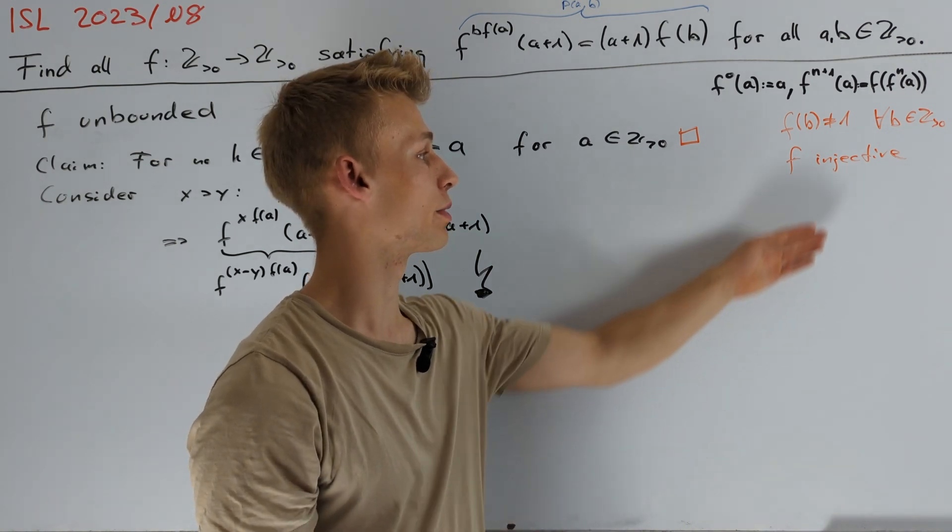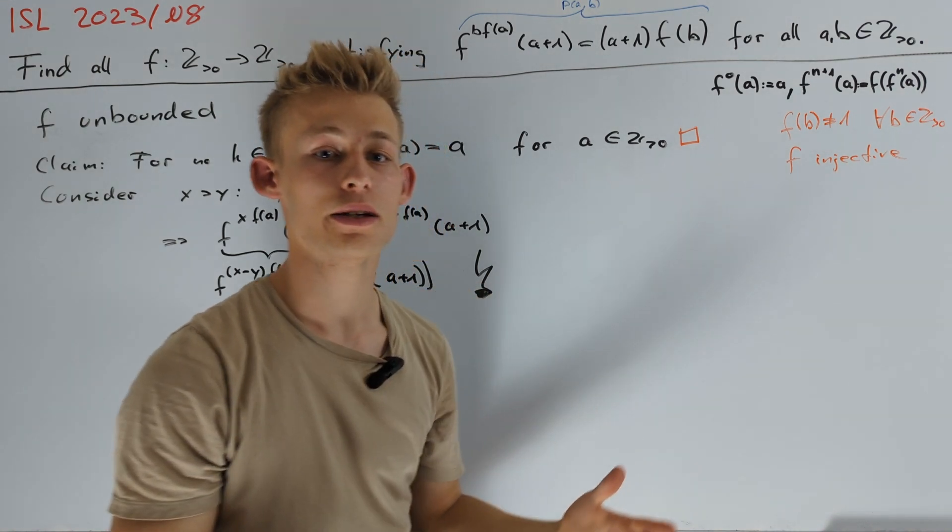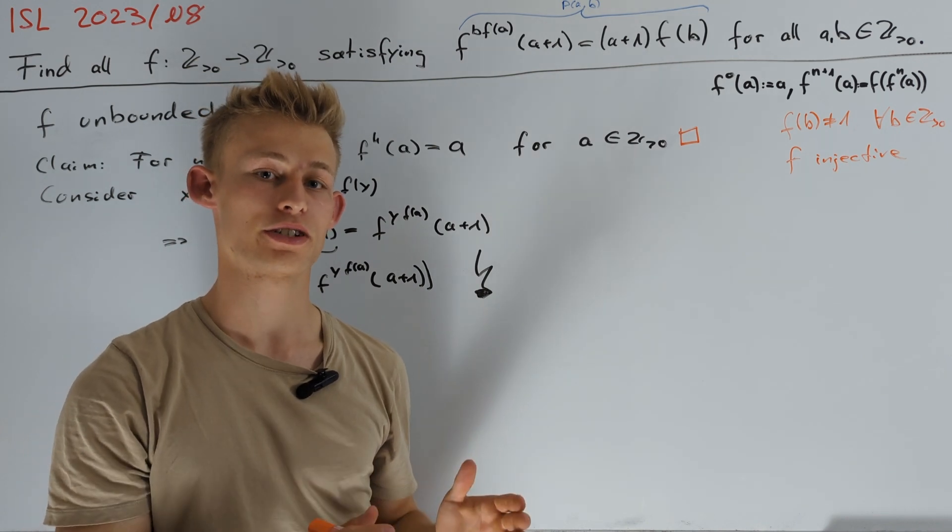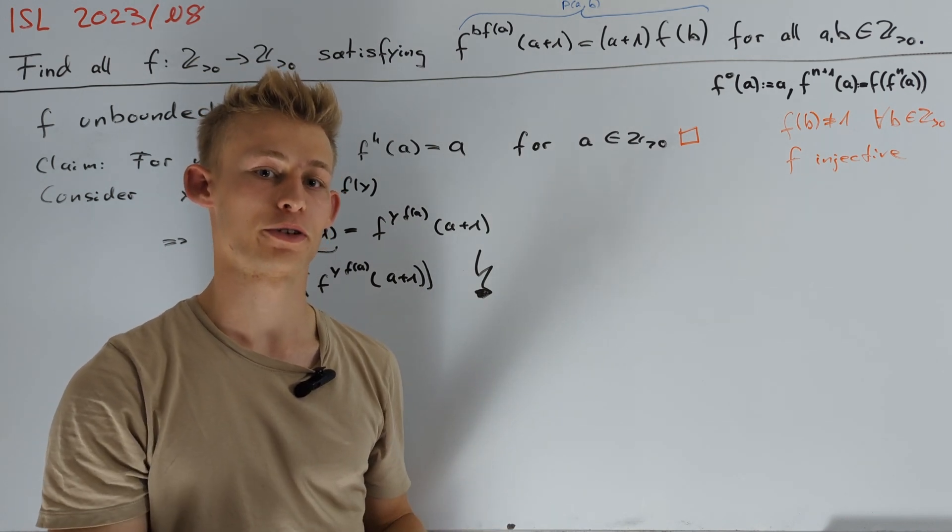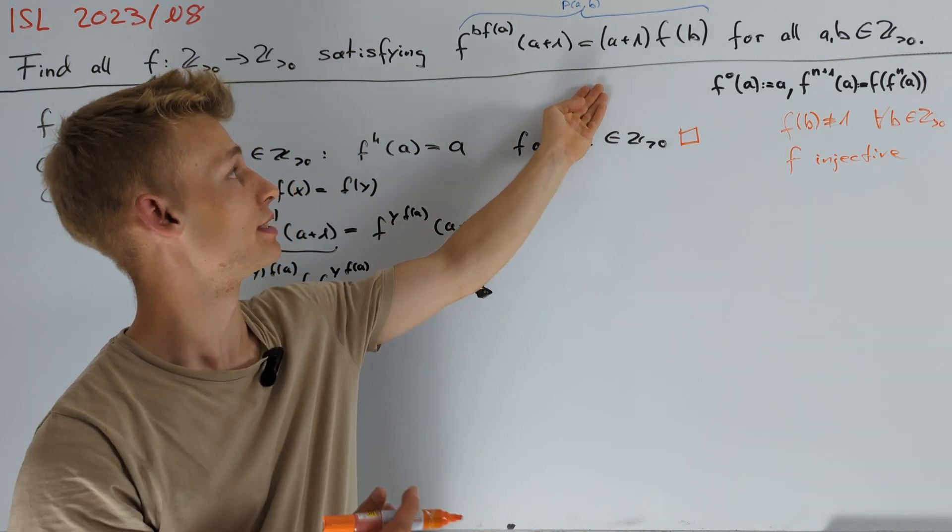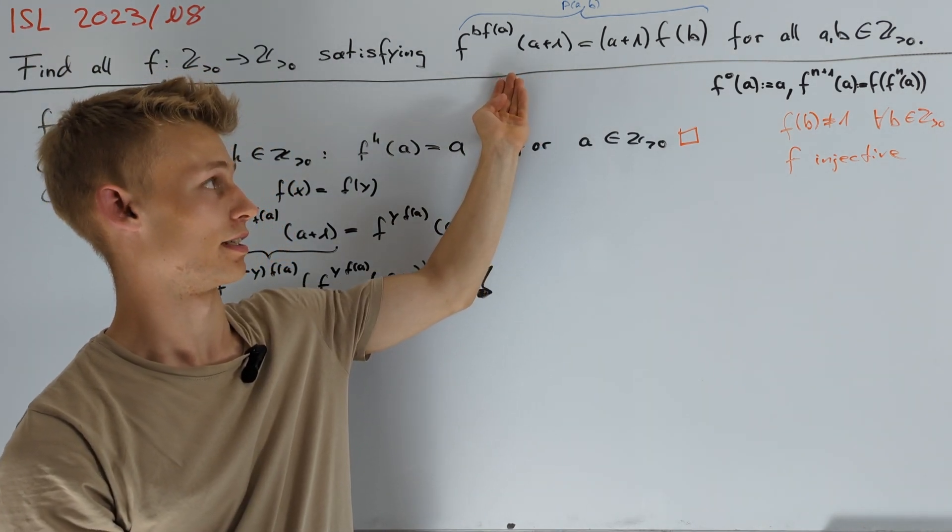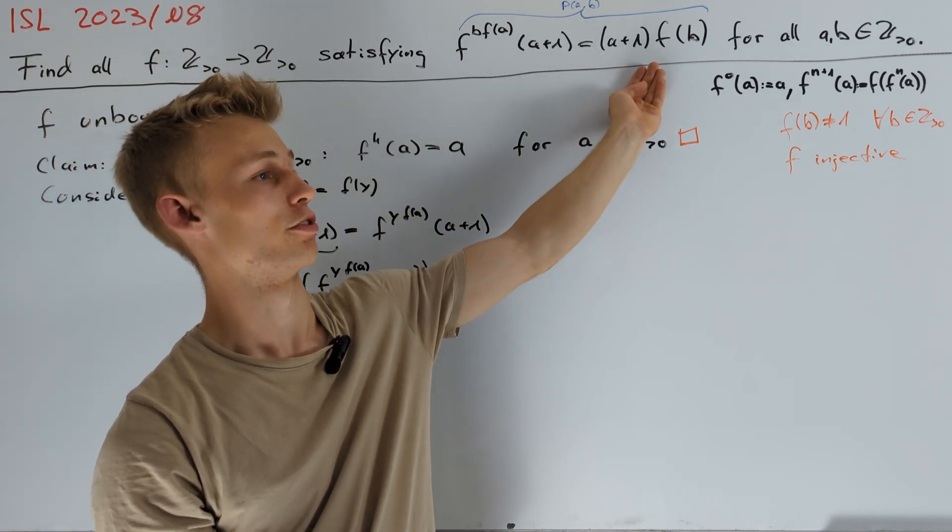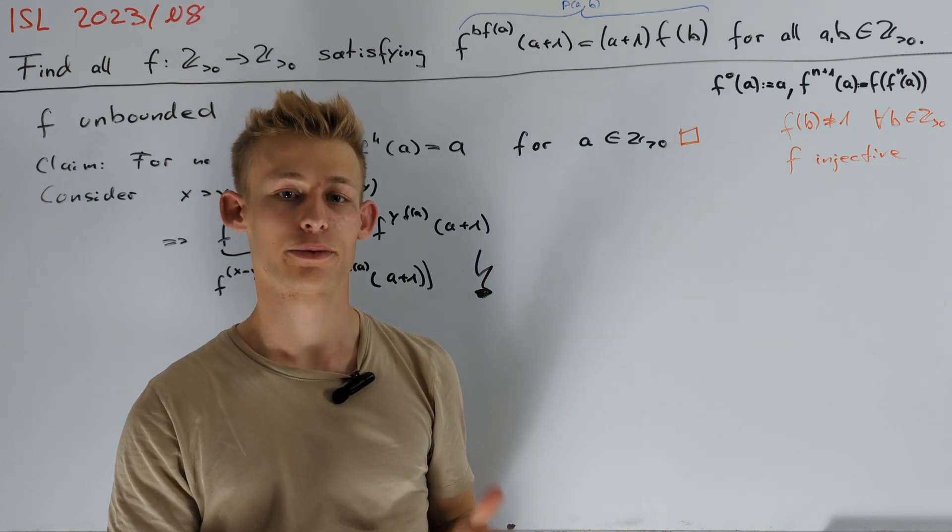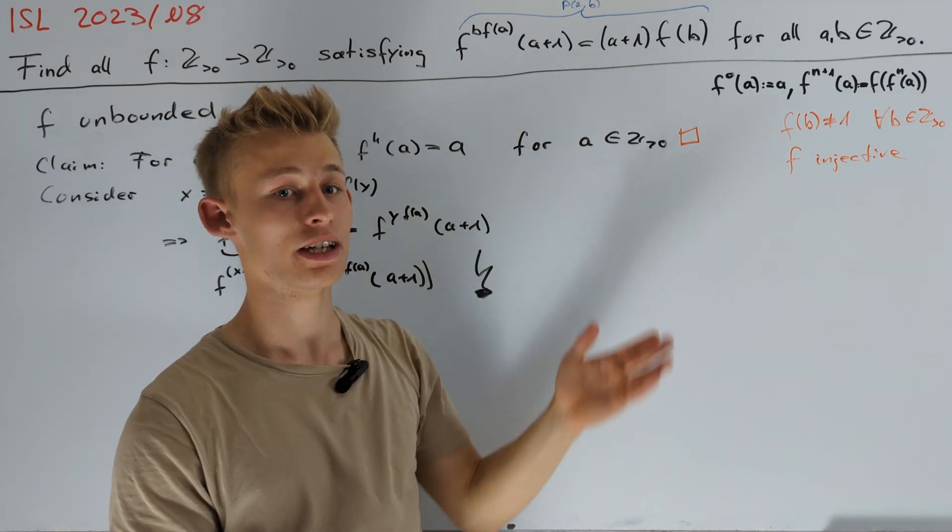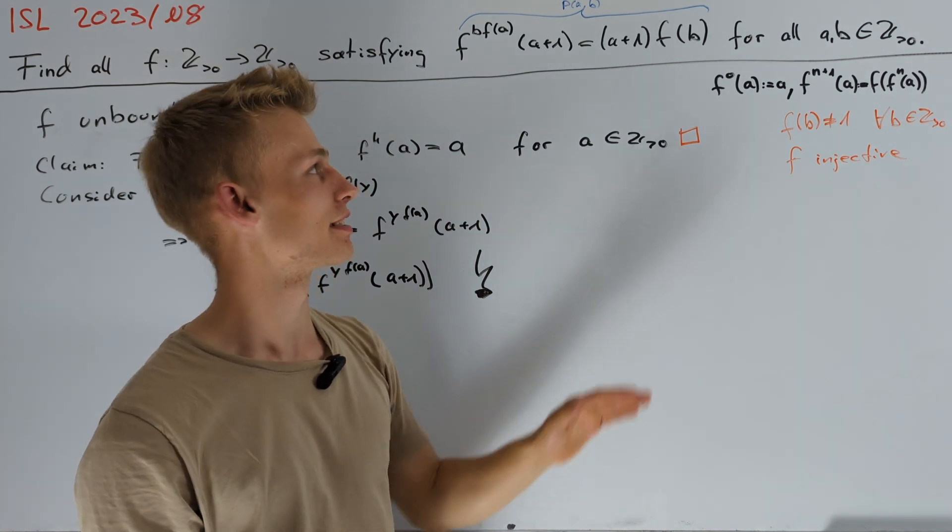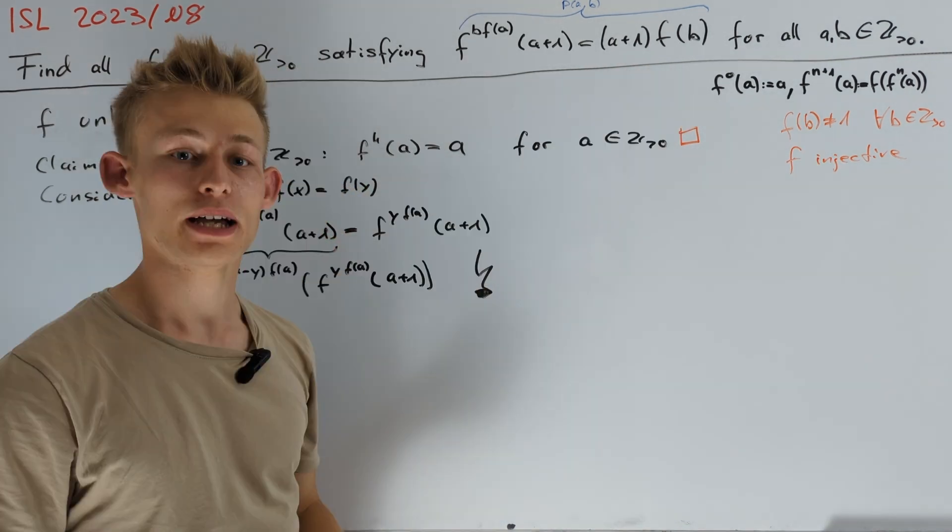Let's try to figure out how we can use this fact. And normally, when we want to use the fact that our function is injective, it would be great if we have an equation where on both sides we have something of the form f of something. Taking a look at our given functional equation, we see that this is indeed given on our left hand side. But unfortunately, not on the right. So, our goal is to modify the right hand side in such a way that we can apply the functional equation again to get something similar to the left hand side.